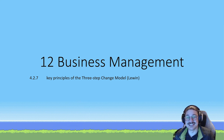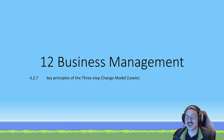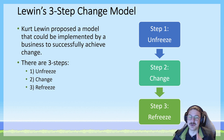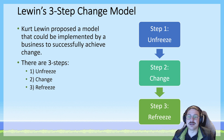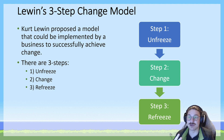G'day guys and welcome to this business management lesson. In today's lesson, we're looking at Key Knowledge Point 4.2.7 — that is Unit 4, Area of Study 2, and the seventh Key Knowledge Point for this Area of Study. Today, specifically, we're looking at the key principles of the three-step change model by Lewin. Lewin's three-step change model is a model for how businesses should approach change, and those three steps are unfreeze, change, and refreeze.